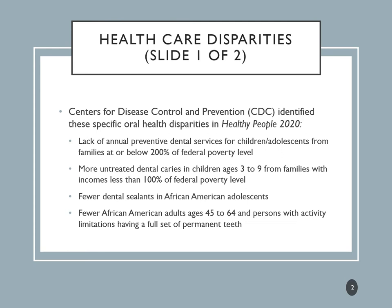The CDC identified specific oral health disparities in Healthy People 2020. They identified a lack of annual preventive dental services for children and adolescents from families at or below 200% of the federal poverty level. More untreated dental caries in children ages 3 to 9 come from families with incomes less than 100% of the federal poverty line.